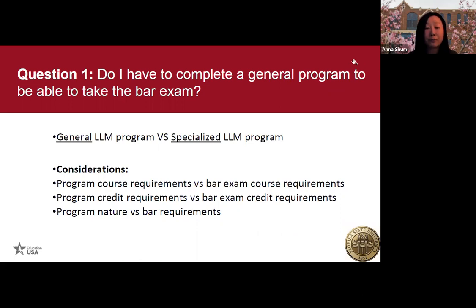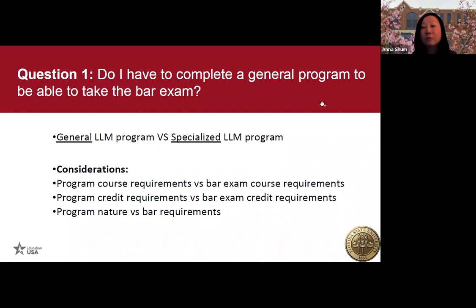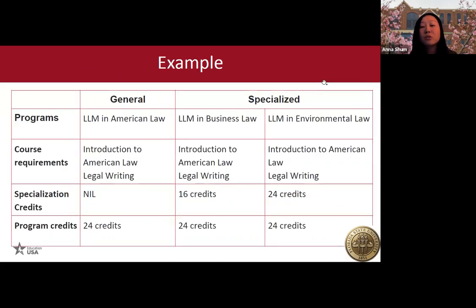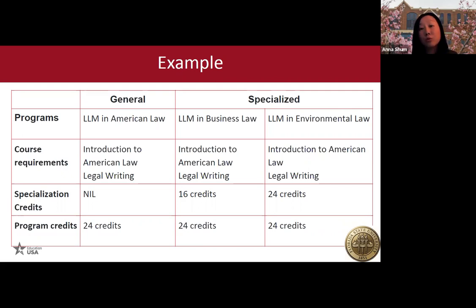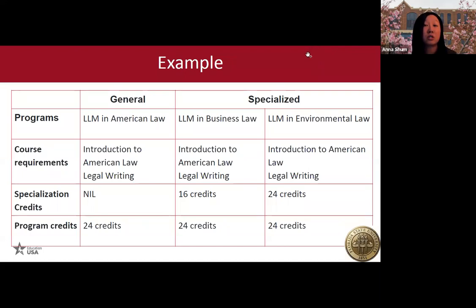The next thing to consider is the program credit requirement. In a general program, there's lots of flexibility. But for a specialized program, you might be required to take a certain number of credits from a list of specialized classes, or simply take all the classes from that specialized list — which makes it tricky when trying to satisfy bar requirements. Last but not least is the nature of the program — specifically, the delivery method. Is it online or in-person? Some jurisdictions don't accept online credits, though many jurisdictions have been fairly flexible because of COVID.